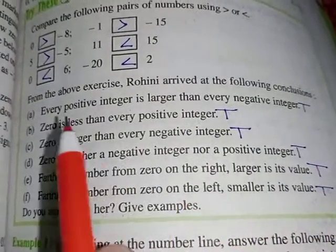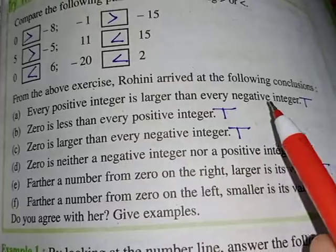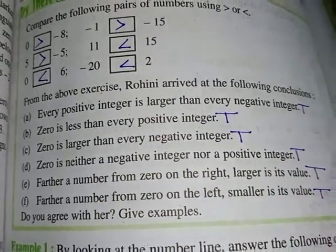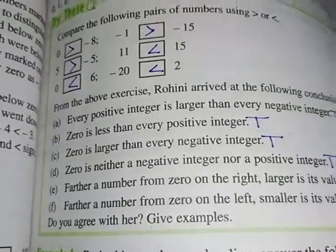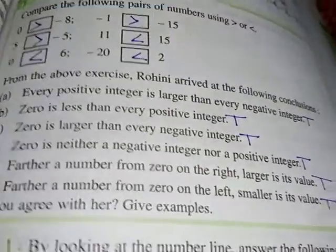Every positive integer is larger than a negative integer - that's definitely true, right? We know that -2 and 2, 2 is greater, right? So keep in mind that positive integers are always bigger than negative integers.